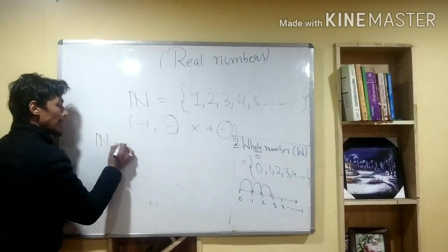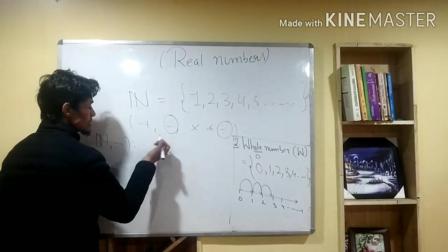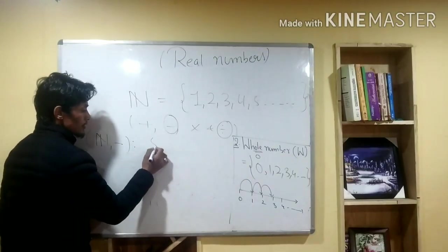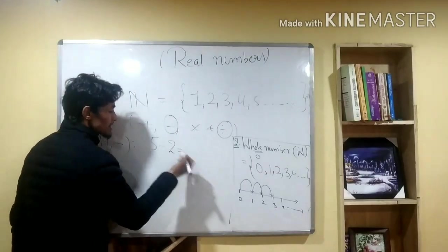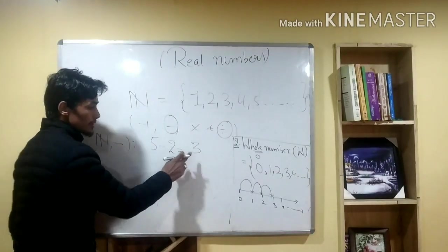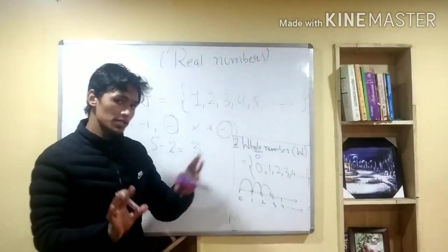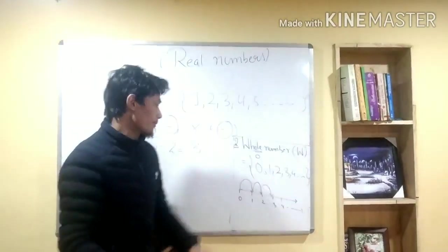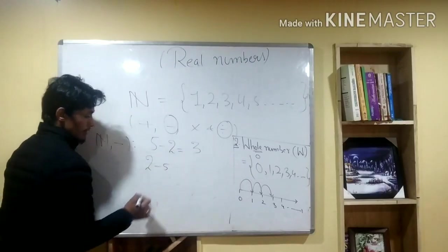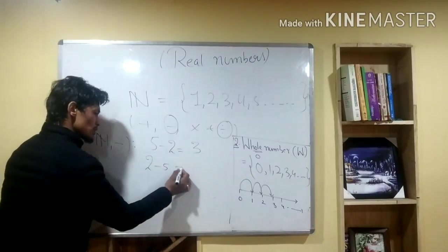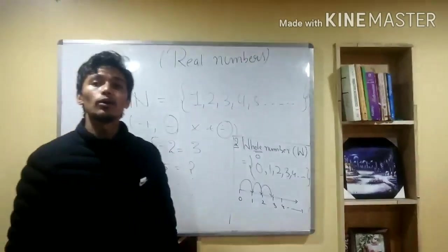Again, we will discuss the natural number. Suppose: think of this — five and two, subtract, gives three. We give the result as a whole number of the natural number. But suppose we do 2 minus 5. This cannot be solved in the natural number system. 2 minus 5 — what is happening?